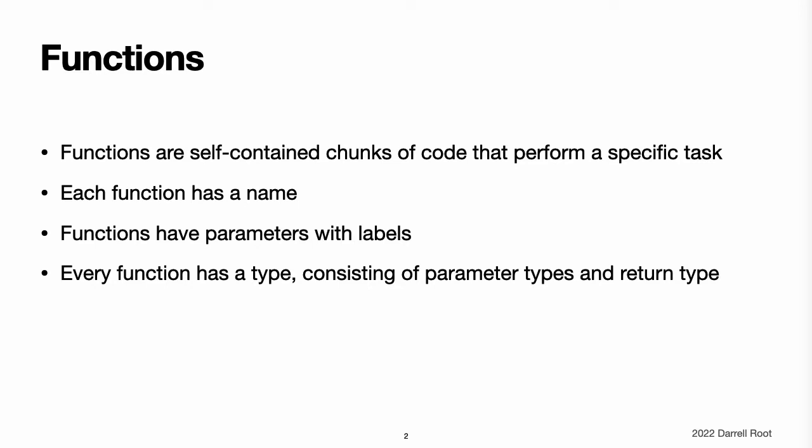Parameters can provide default values to simplify function calls and can be passed as in-out parameters, which modify a passed variable once the function has completed its execution. Every function in Swift has a type consisting of the function's parameter types and return type. You can use this type like any other type in Swift, which makes it easy to pass functions as parameters to other functions and to return functions from functions. Functions can also be written within other functions to encapsulate useful functionality within a nested function scope.